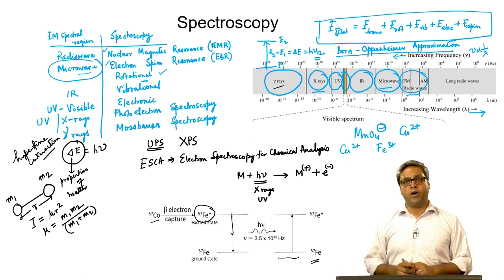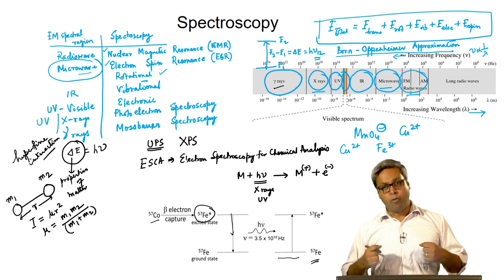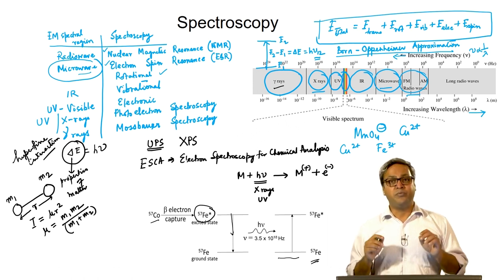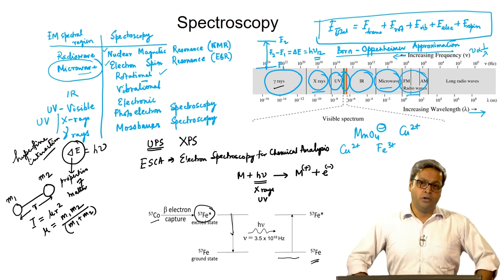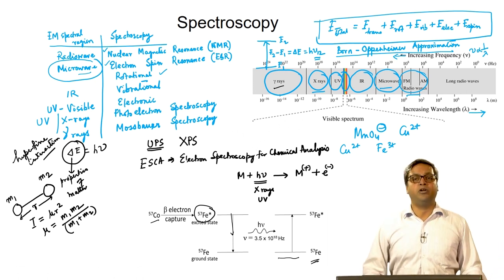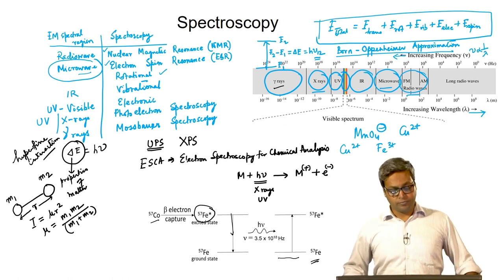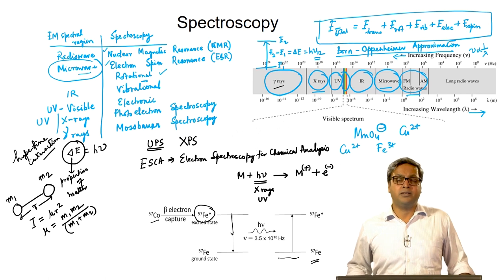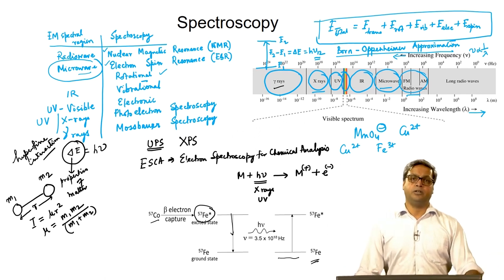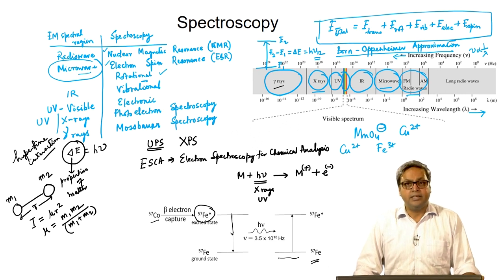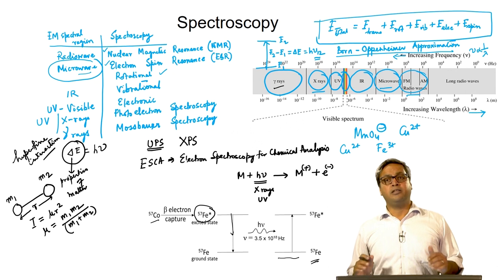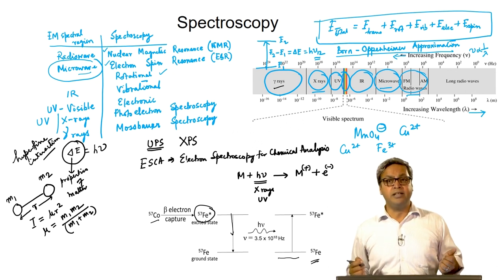IR spectroscopy provides information about vibrations. When a bond vibrates, the vibrational frequency depends on the bond strength or force constant, so we can get information on bond strength of different bonds in a molecule from IR spectroscopy. Similarly, NMR or ESR spectroscopy provides information about molecular structure. Different spectroscopies thus provide different information about the molecule or matter, and we will discuss these in greater detail in later lectures.